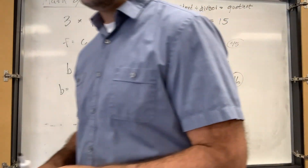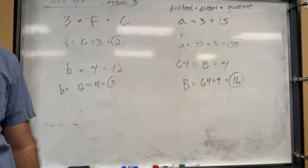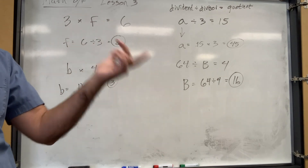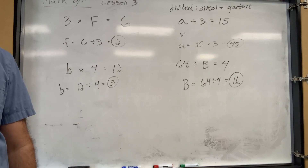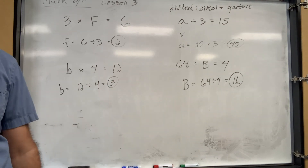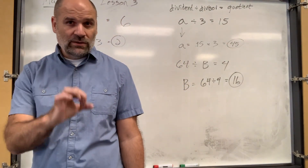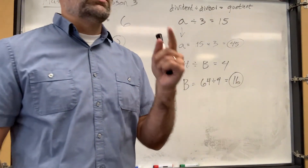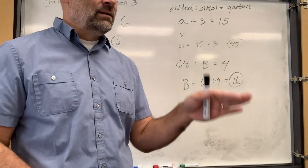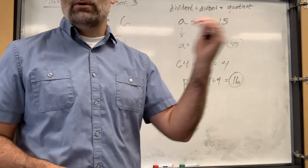Any questions so far? Remember: for addition, when you're missing something, it's always subtraction to figure out that missing addend. For multiplication, when you're missing a factor, it's always division. But when you're missing something in a subtraction or division problem, that's when you slow down. When you're missing something in a subtraction problem, you're either going to add or subtract. When you're missing something in a division problem, you're either going to multiply or divide — never add or subtract, those aren't related. Decide beforehand or work out both and see what works.